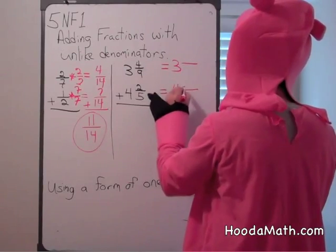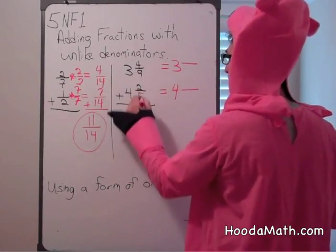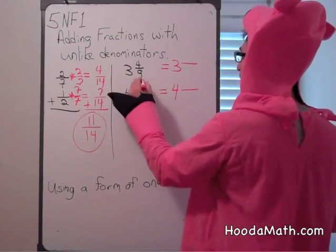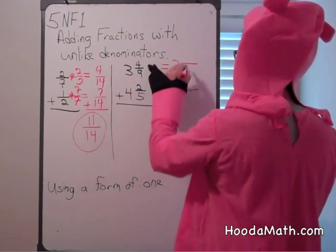To change to a common denominator, we multiply the two denominators, the two unlike ones. 9 times 5 is 45.